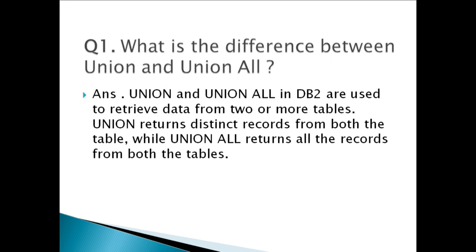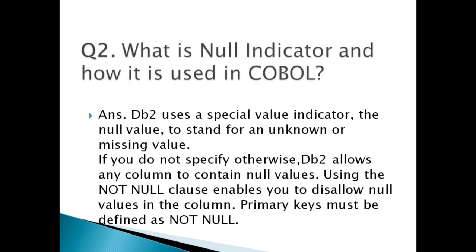Question one: What is the difference between UNION and UNION ALL? UNION and UNION ALL in DB2 are used to retrieve data from two or more tables. UNION returns distinct records from both tables, while UNION ALL returns all the records from both tables. If you know that tables already contain distinct records, use UNION ALL — it will take lesser execution time, so performance of the query will improve.